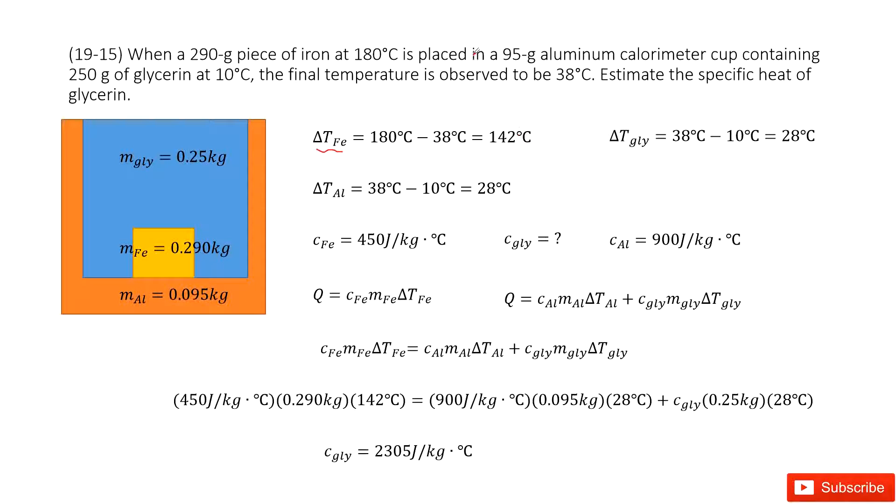Next, the mass of aluminum is given. We write it as M_Al as 95 grams. This aluminum cup contains the glycerin. The mass is given as 250 grams.